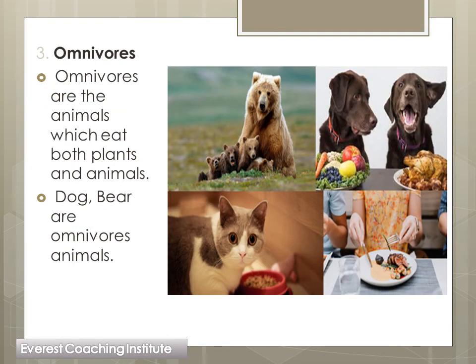Now our third category comes - omnivores. Omnivores eat both plants and animals. They eat plants and they eat flesh as well. Animals that eat both plants and animals are omnivores. You will see them nearby - like a dog. A dog eats both things. And cat also eats both things. Mouse also eats. So these are omnivore animals.